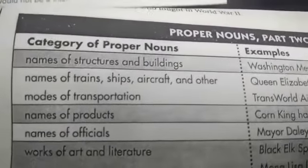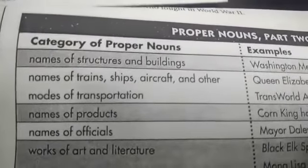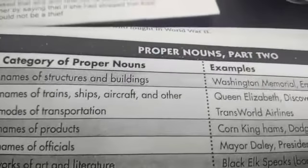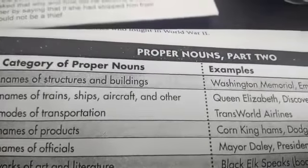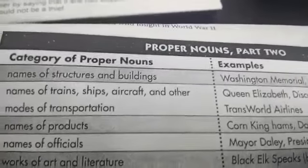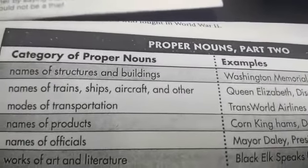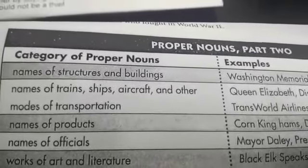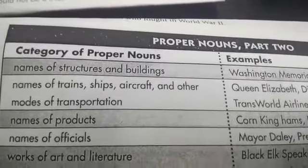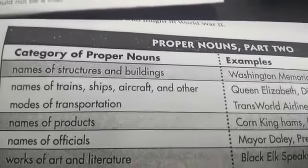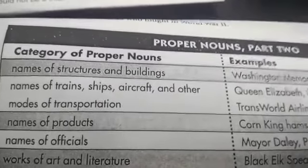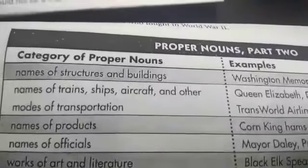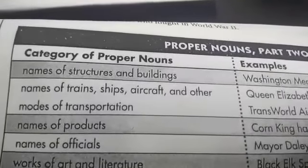Names of trains, ships, aircraft, and other modes of transportation are also capitalized. For example, Trans World Airlines — the first letter of each word in the name of the aircraft or airline is capitalized.